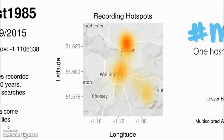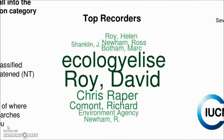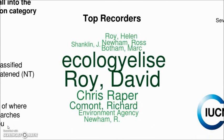You also get this lovely heat map, created in the R programming language — a kernel density map of records in our area. You can see there are lots of records coming in from Benson and Wallingford, near where I live. You also get this name cloud: the names of all the recorders who've contributed records into the dataset in my area, with the size of their names scaled to how many records they've sent in. David Roy here is one of the biggest submitters of data in our area.